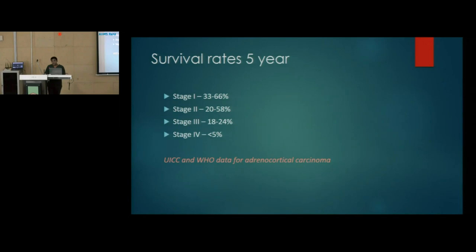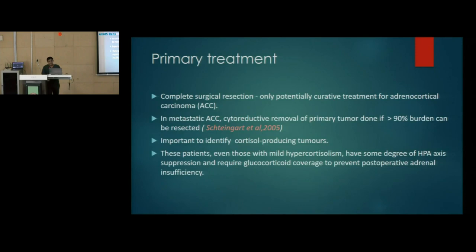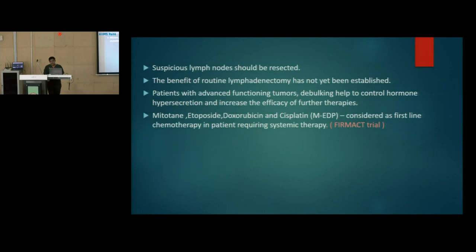Adrenocortical carcinoma has a poor prognosis with five-year survival rates of approximately 60% for Stage 1, 50% for Stage 2, 20% for Stage 3, and less than 5% for Stage 4. The primary treatment is complete surgical excision — the only potentially curative treatment. In metastatic ACC, cytoreductive removal of more than 90% of the tumor is recommended. Cortisol-producing tumors require glucocorticoid coverage perioperatively due to HPA axis suppression. All suspicious lymph nodes should be resected, though the benefit of routine lymphadenectomy has not been established.